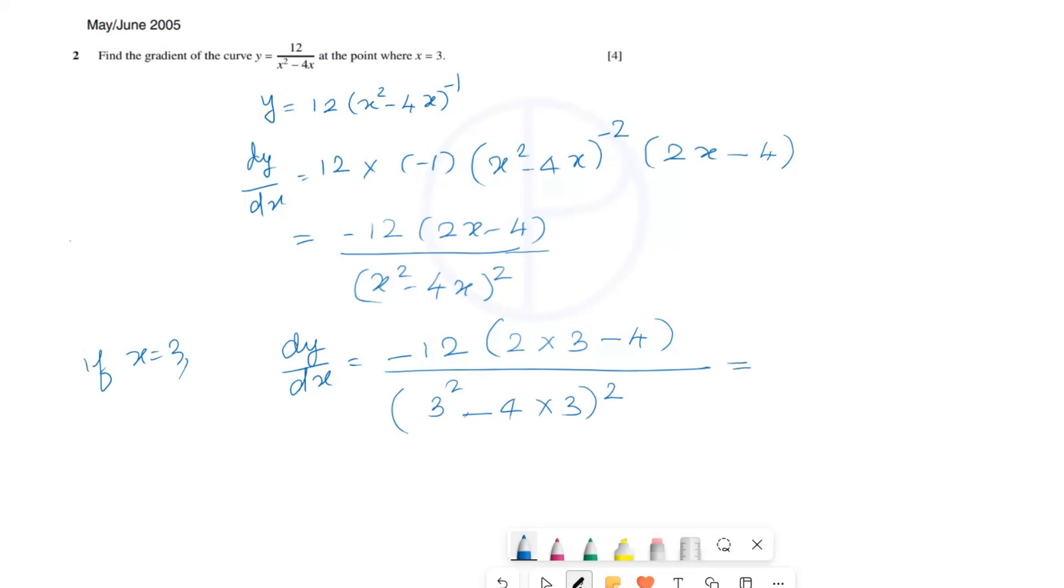...get negative 8 over 3. So the gradient is negative 8 over 3.